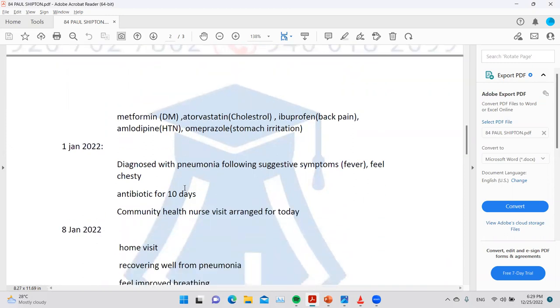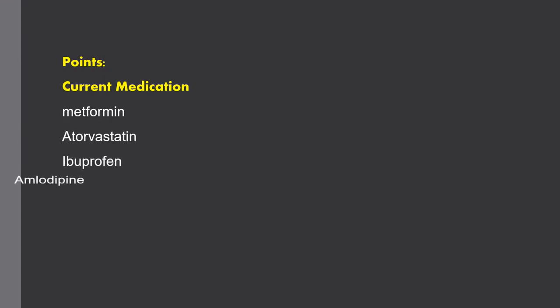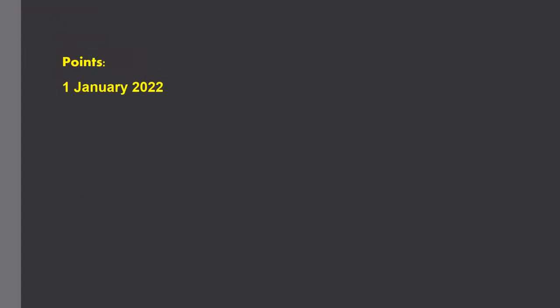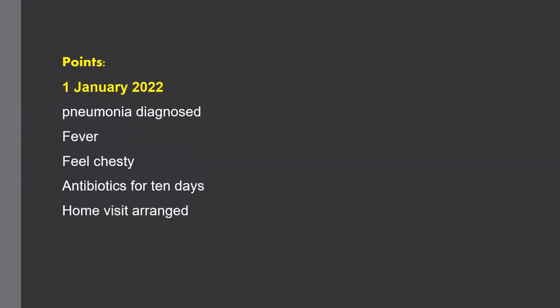On 1st January, Mr. Shipman was diagnosed with pneumonia following suggestive symptoms — fever and feeling chesty. He was given antibiotics for 10 days and community home visits were arranged. When writing dates, always use expanded form. These are the key points we need from the January 1st entry.